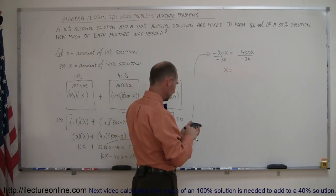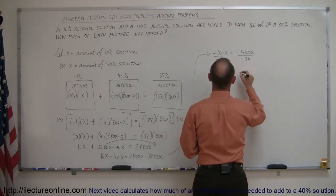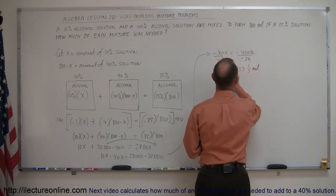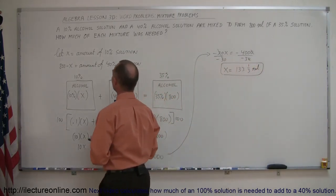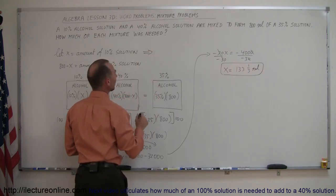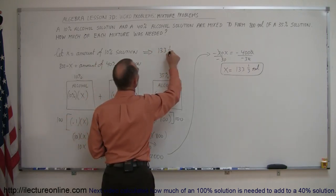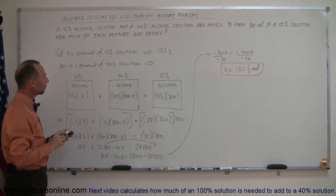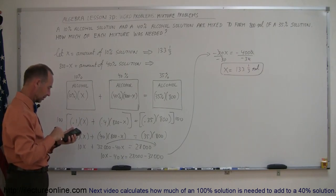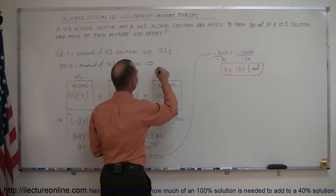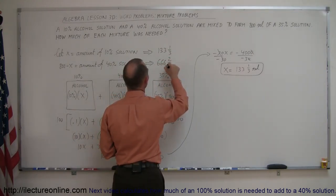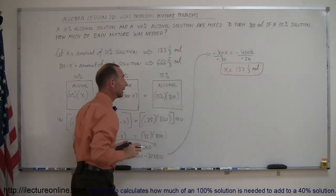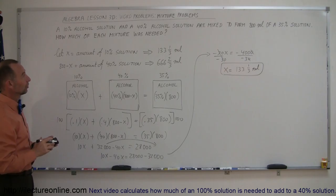400 divided by 3 is 133 and a third, so x = 133⅓ milliliters. That means we need 133⅓ milliliters of the 10% solution. For the 40% solution: 800 minus 133⅓ equals 666⅔ milliliters. Those are the amounts needed of each solution.